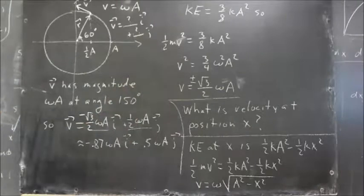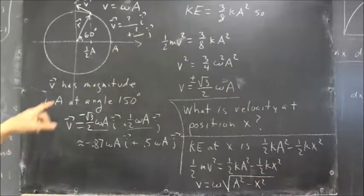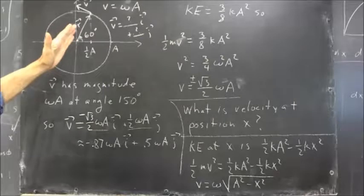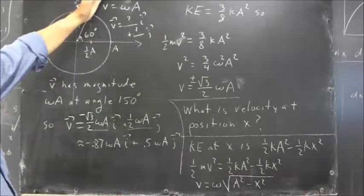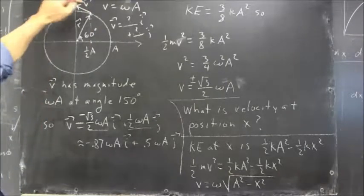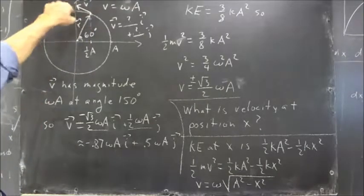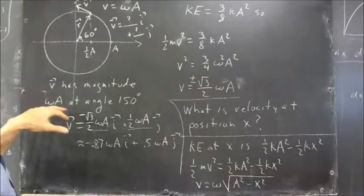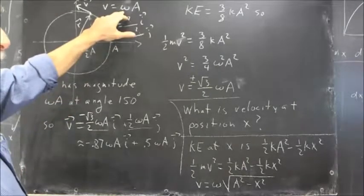So that puts the vector V, which is, if you start with the 60 degree position, then rotate 90 degrees, you get to the V vector. So it's going to be 60 plus 90 degrees, or 150 degrees. So V has magnitude omega A, as we know, and it's at angle 150 degrees.